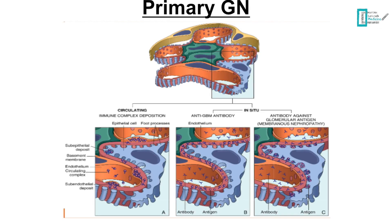For primary glomerular nephritis, we have three main sites where immune deposition can precipitate and cause disease: the subepithelial space, the glomerular basement membrane, and the subendothelial space.